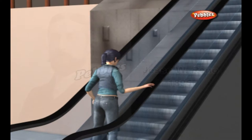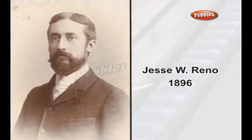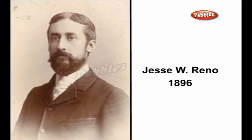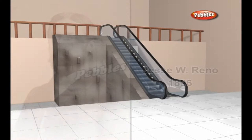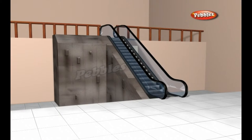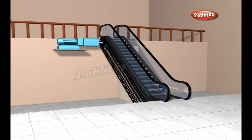Jesse W. Reno invented the first working escalator and installed it alongside the old iron pier at Coney Island, New York, in 1896. The core of an escalator is a pair of chains looped around two pairs of gears.